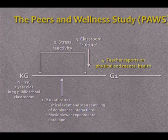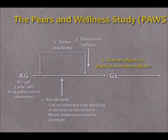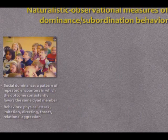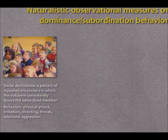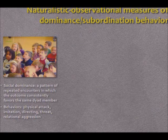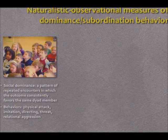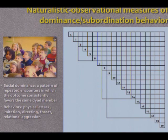The naturalistic observational measures of dominance and subordination relied on a definition of social dominance as a pattern of repeated encounters in which the outcome consistently favors the same member of the dyad. We sampled behaviors such as physical attack, imitation, directing behavior, threat, relational aggression, and so on. At the end we had accumulated on the order of 50,000 observations of dyadic interactions.